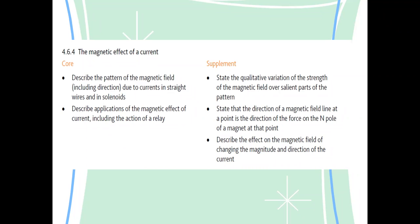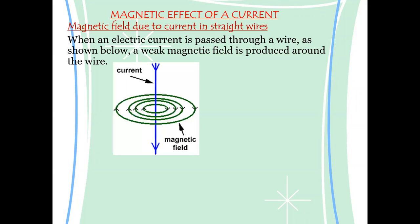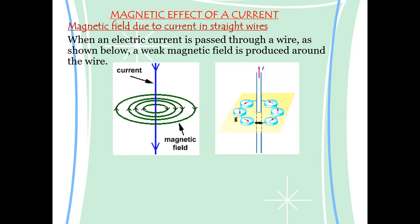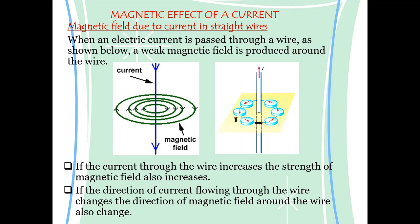The magnetic effect of current: whenever a current passes through a wire, it produces a magnetic field. For a straight wire, these magnetic field lines are circular. The first two field lines should be closer to each other because near the wire the magnetic field is stronger. Away from the wire the field is weaker, so the spacing between lines increases. Spacing between lines represents the strength of the magnetic field.